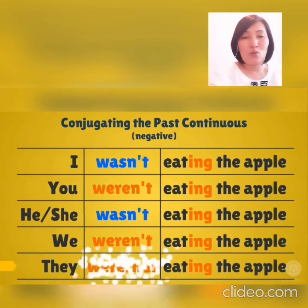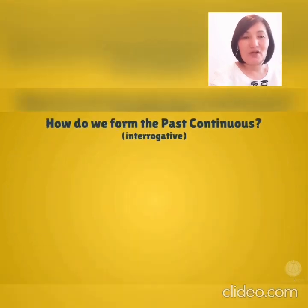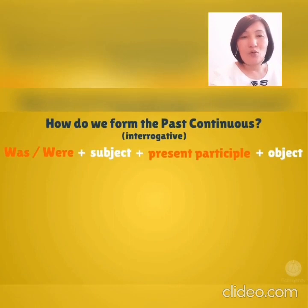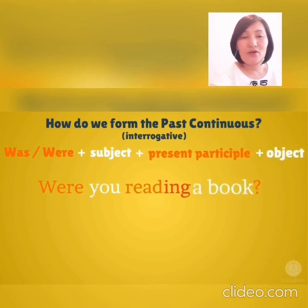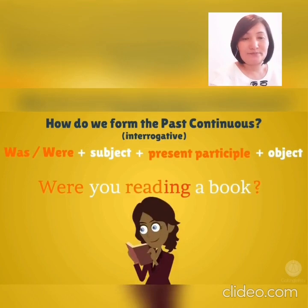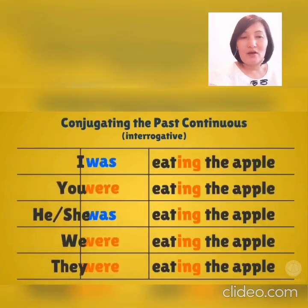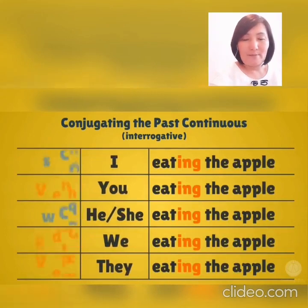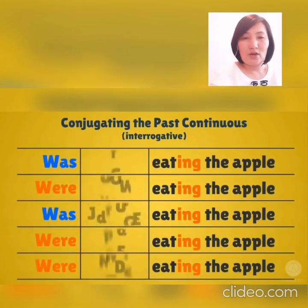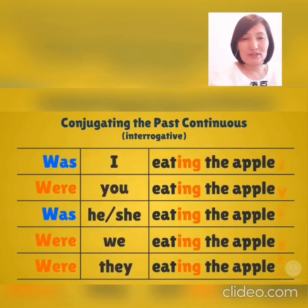And they weren't. How do we form the past continuous interrogative? Was/were plus subject plus present participle plus object. For example: Were you reading a book? Was I eating the apple? Yes, I was. No, I wasn't.